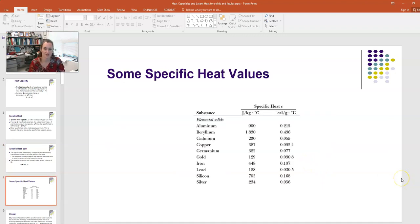Here are specific heats for some common metals to give you a ballpark idea. Lead has a pretty low specific heat compared to other metals, 128 joules per kilogram per degree Celsius. The highest on this list is beryllium at 1830 joules per kilogram per degree Celsius.